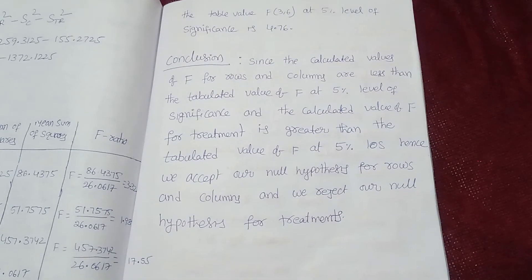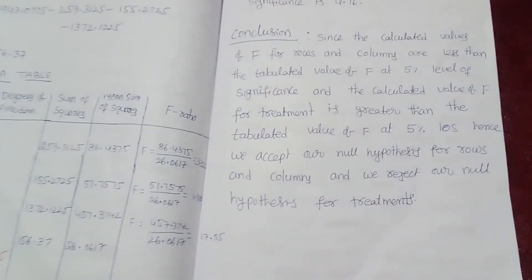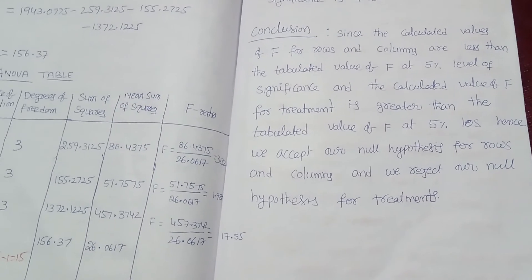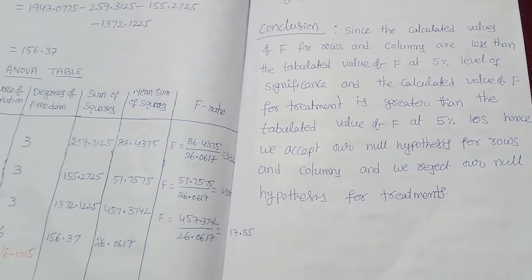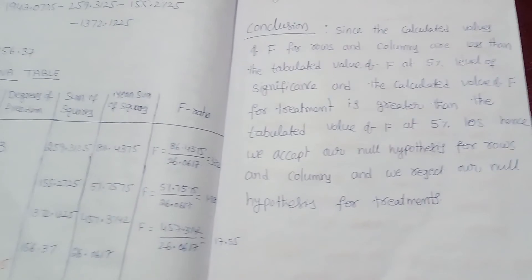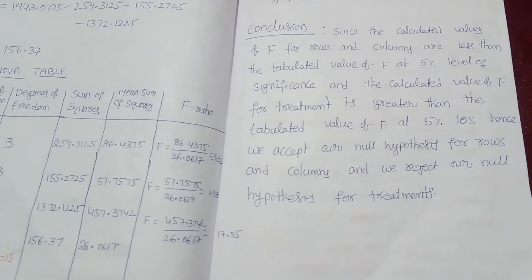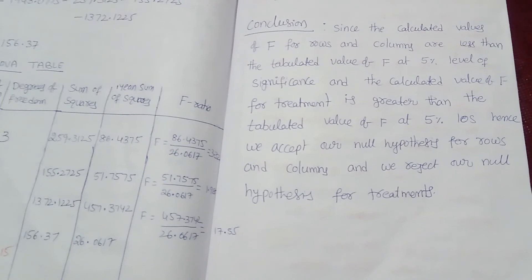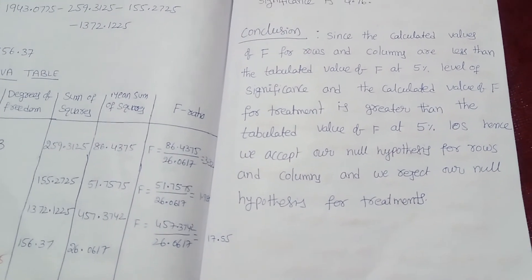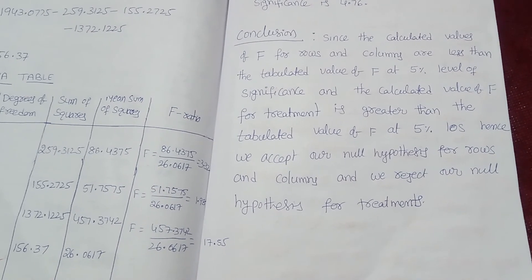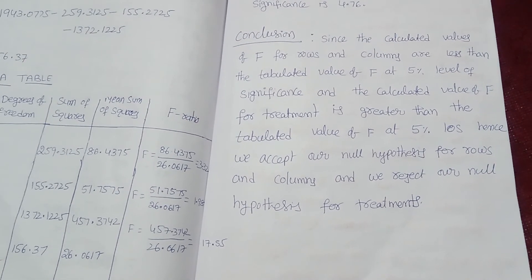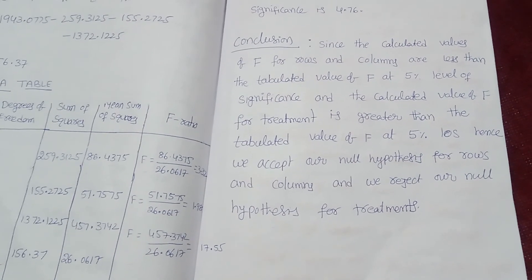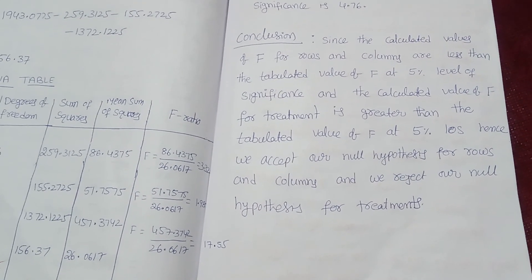In the examination, the LSD problem is asked compulsorily. First calculate row sum of squares, column sum of squares, treatment sum of squares, and error sum of squares. In the ANOVA table, draw the table with pencil but write values with pen. The conclusion is most important — maximum table values may be given in the examination; if not, we maintain table values from the table to give the conclusion. Thank you.